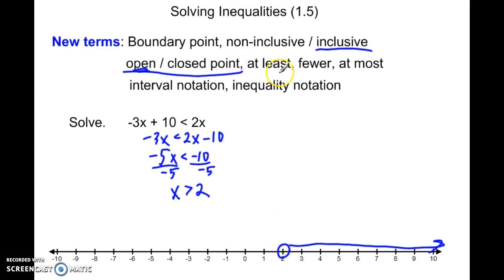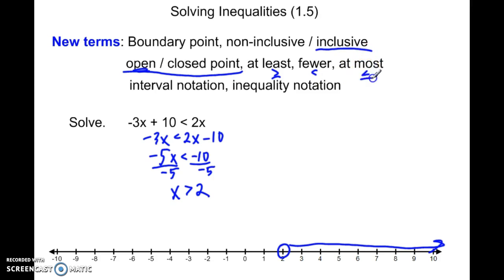Some new terms: 'at least' means greater than or equal to, 'fewer' means less than, and 'at most' means less than or equal to. You'll hear some of those terms and you'll need to translate those.